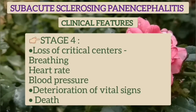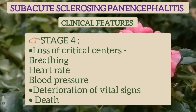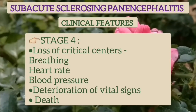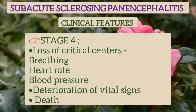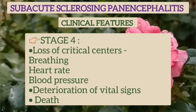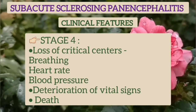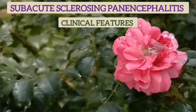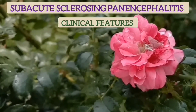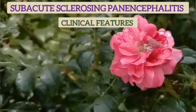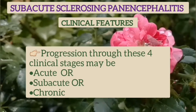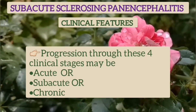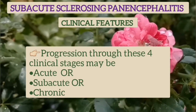In the last stage, there is loss of critical centers in the brain — the breathing, heart rate, and blood pressure centers. There is deterioration of vital signs and death follows. Progression through these four clinical stages may be acute, subacute, or chronic.